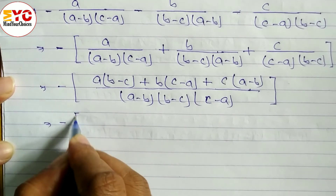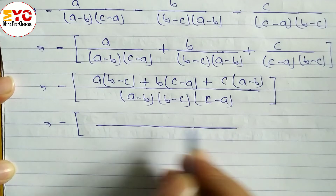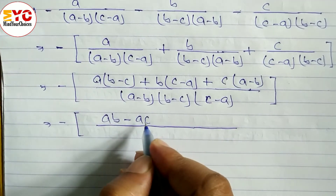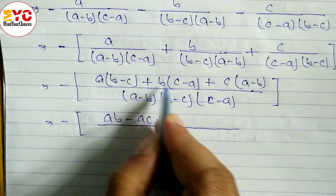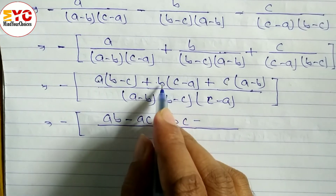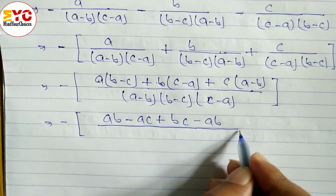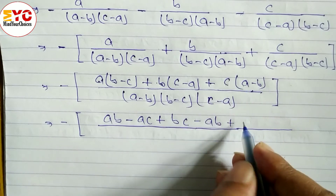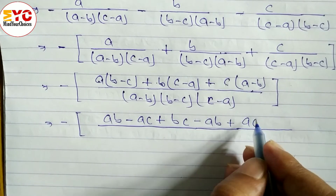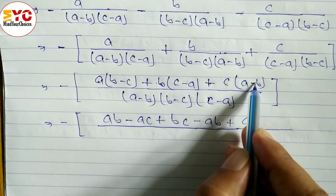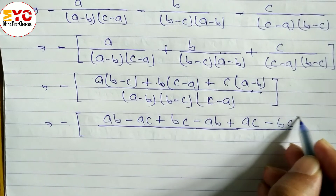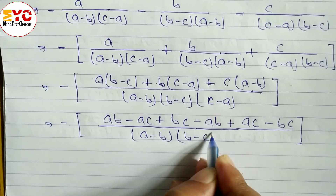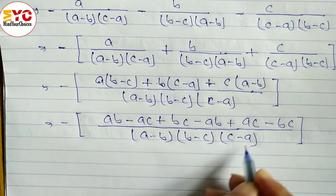Opening the brackets: a times b gives ab, a times minus c gives minus ac. Then b times c gives bc, minus b times a gives minus ab. Then c times a gives ca, minus c times b gives minus bc. All over (a minus b)(b minus c)(c minus a).